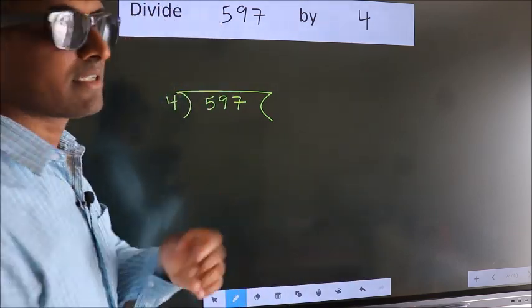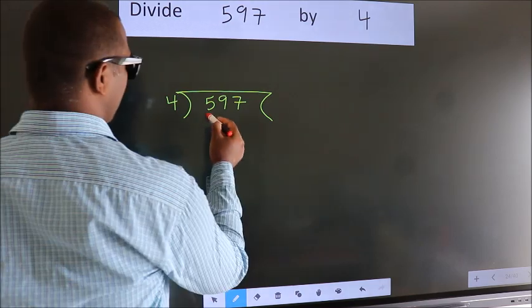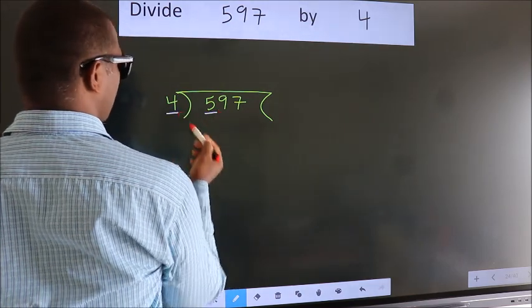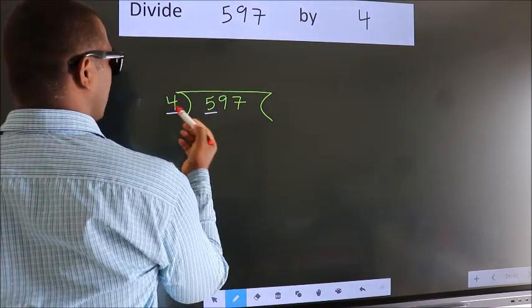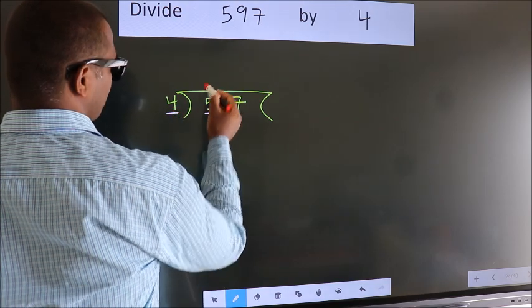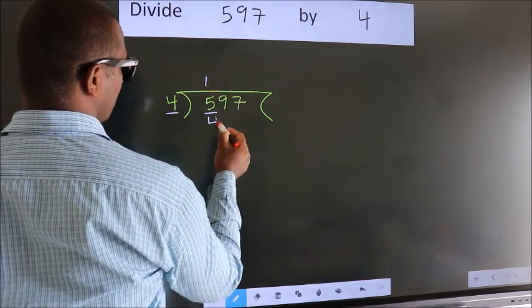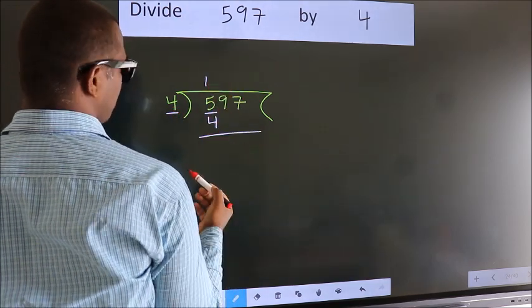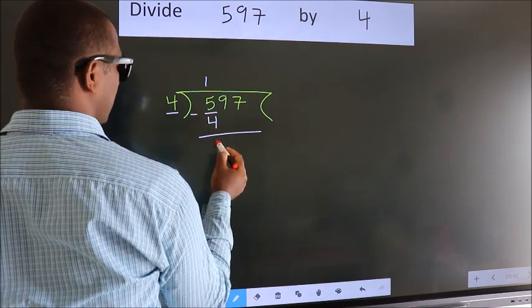Next. Here we have 5, here 4. A number close to 5 in the 4 table is 4 once 4. Now we should subtract. We get 1.